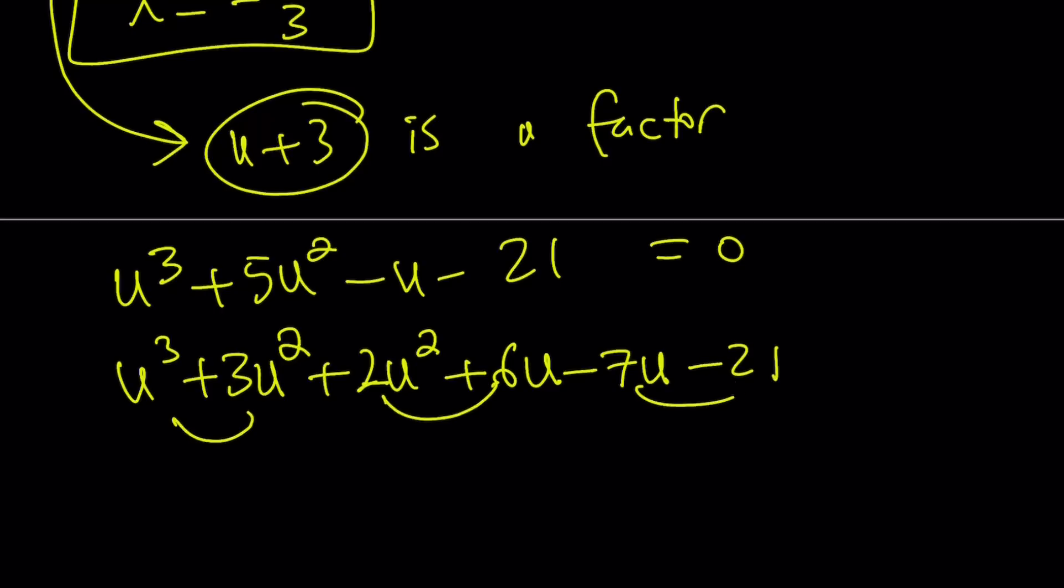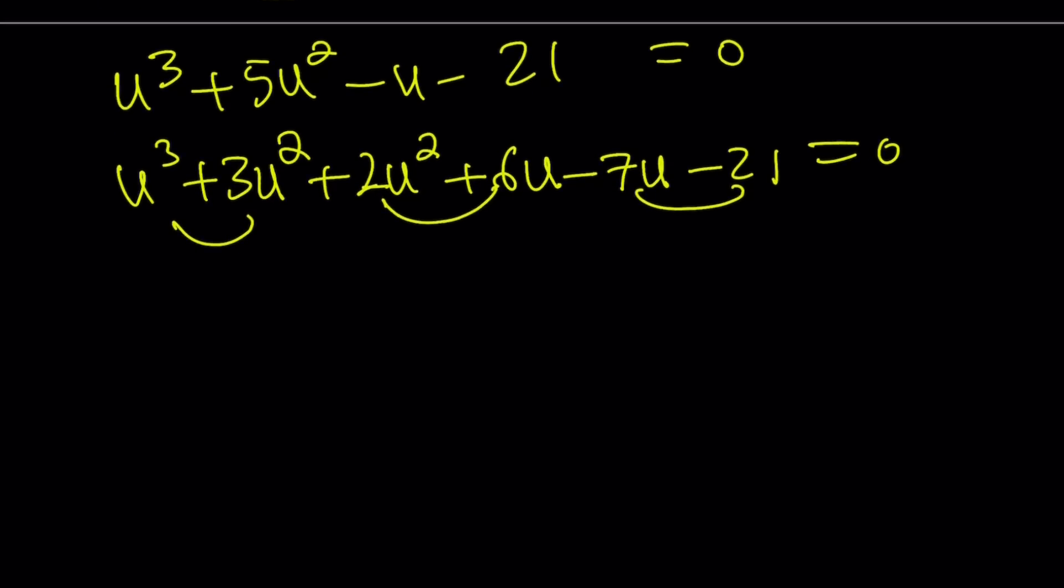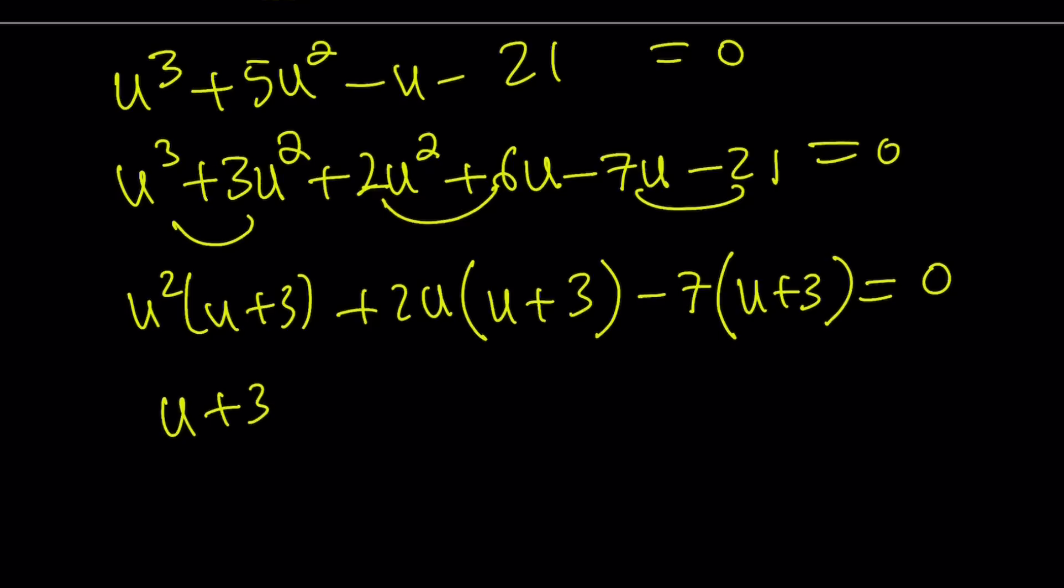And guess what? This is factorable by grouping. That shouldn't be a surprise because we already knew u + 3 is a factor. u² times (u + 3) + 2u. Happy birthday if it's your birthday, of course. And don't be offended if it's not. But, you know, it's just for people who has a birthday on this date. Anyways, and this becomes 0. So u + 3 take out. Inside I have u² + 2u. What can I do? It just keeps coming up. Minus 7 = 0.